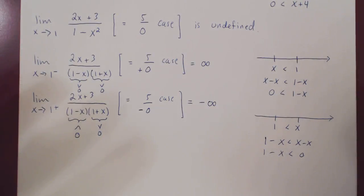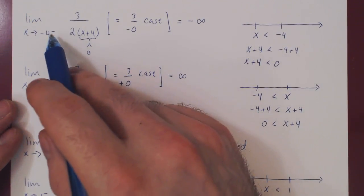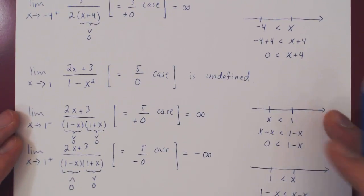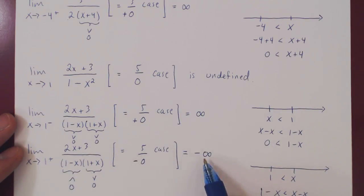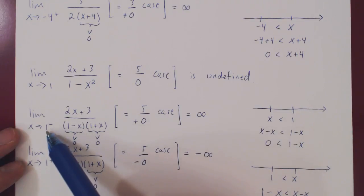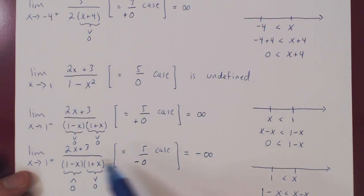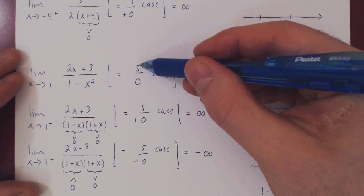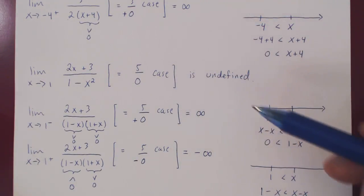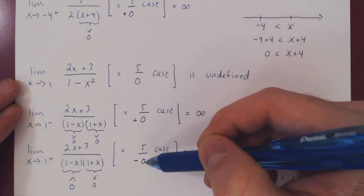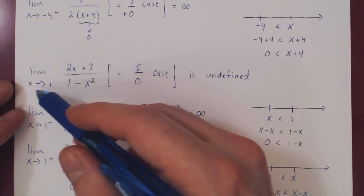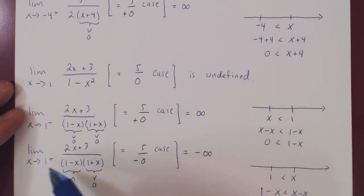Going back to the previous problem, you always have to be careful. In that example, the limit from the left gave negative infinity and the limit from the right gave positive infinity. Here we had the opposite: the limit from the left gave positive infinity and the limit from the right gave negative infinity. So don't assume the limit from the left will always give negative infinity and the limit from the right will always give positive infinity — sometimes it can be the opposite. The lesson is: whenever you have a non-zero over 0 case, you must figure out whether the quantity is positive, negative, or both depending on the side of the limit. If there is any ambiguity with a two-sided limit, consider the limit from the left and then from the right.